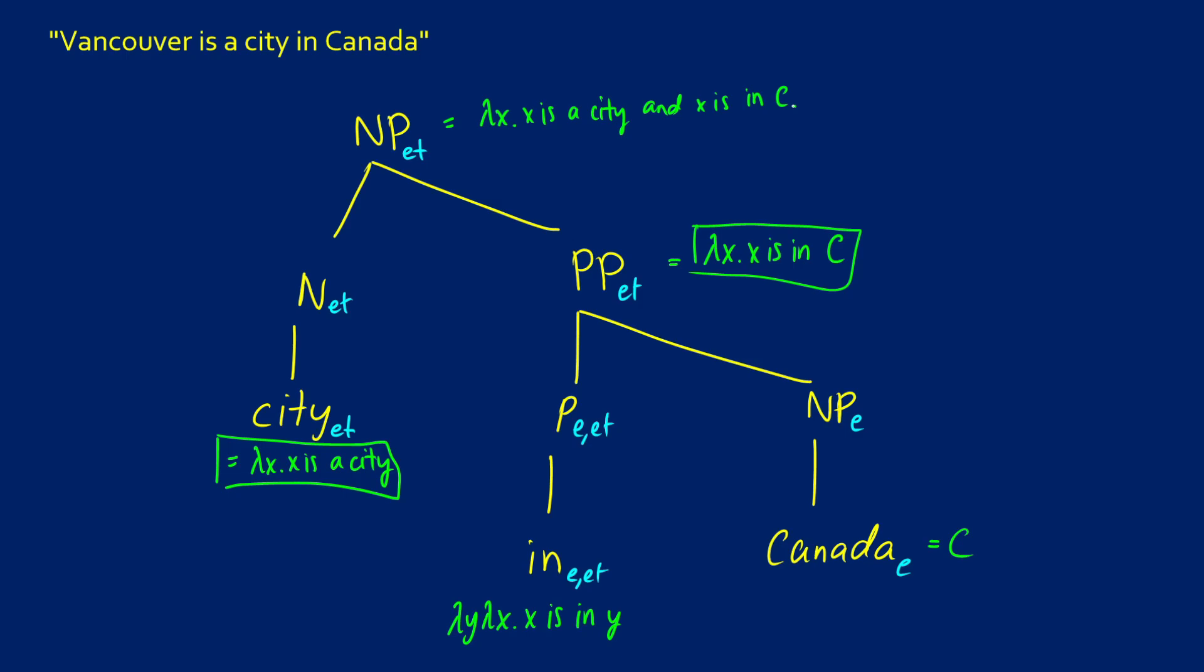So this would be Vancouver is a city in Canada. And then when we keep going up the tree, a city is a city, Vancouver is a city in Canada, this sentence is going to be true if and only if, then what we would do is we say Vancouver, v is a city and v is in C.